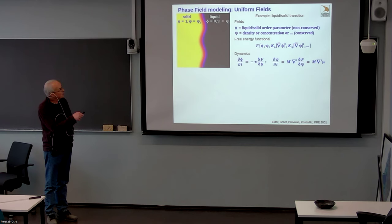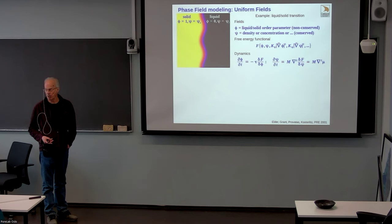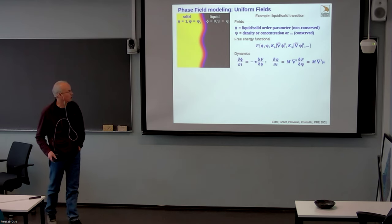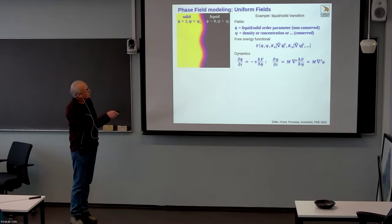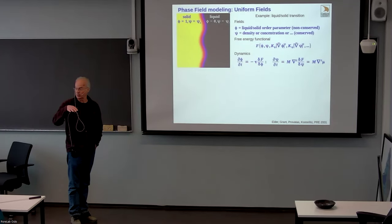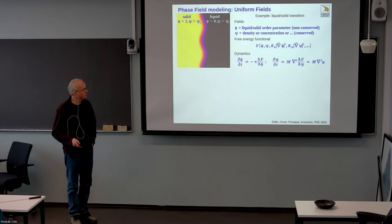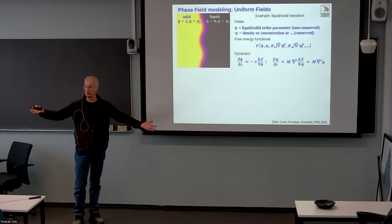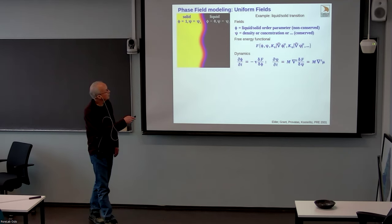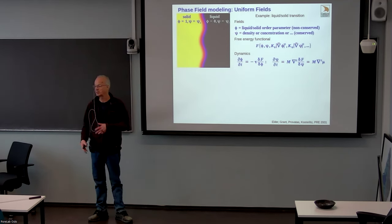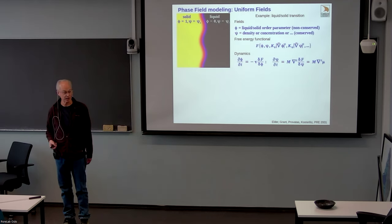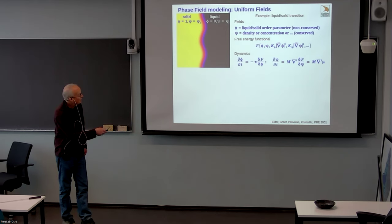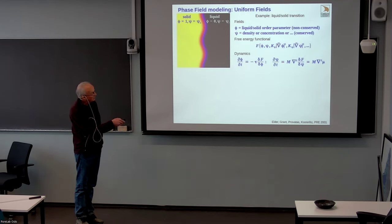With a typical phase field model, the physics you get out can be seen by taking the sharp interface limit. For a liquid-solid transition you may have one field—the phase field—distinguishing between liquid and solid. Historically, people said liquid is zero and solid is one. You may have other fields; the two states may have a different concentration or density—some conserved quantity that restricts the growth and motion. We assume dissipative dynamics, where the rate of change of the fields is determined by gradients in the free energy.